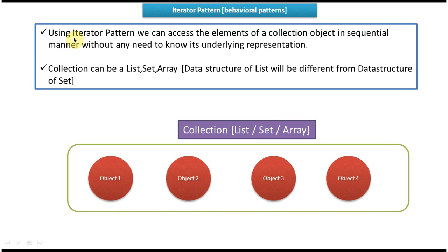Now if you read this explanation, you can understand very clearly. Using the Iterator Design Pattern, we can access the elements of a collection object — object 1, object 2, object 3, object 4 — in a sequential manner, without any need to know the underlying representation. We do not need to worry about the internal data structure of list, set, or array.